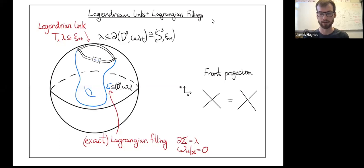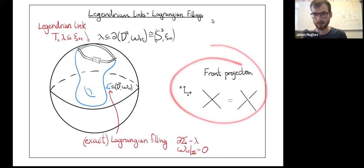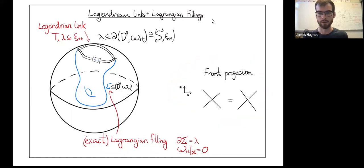If you're not familiar with Legendrians, you can think of them as smooth links with some added properties. All we'll really need is that if you look at the front projection into the x-z plane, we can lift that uniquely to Legendrian in contact S3 by setting the y-coordinate to be dz over dx, so the slope.